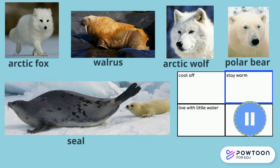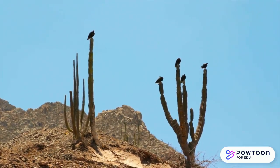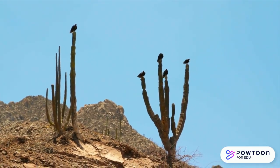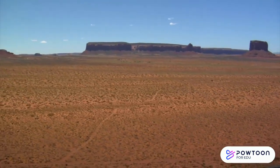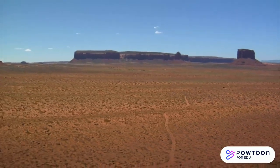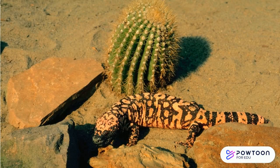Now let's take a look at some animals that live in very dry places. These animals all have structures that allow them to go for long periods of time without water. Have you ever wondered why camels have humps? The humps are filled with fat, which camels can use for both food and water when they can't find anything to eat or drink. This gila monster has a tail that works the same way — it can live for months on the food stored in its tail.